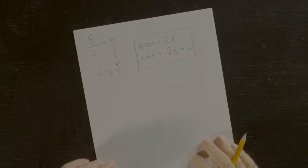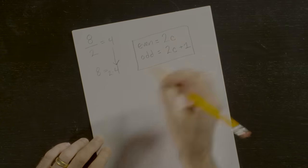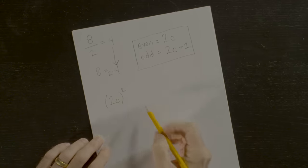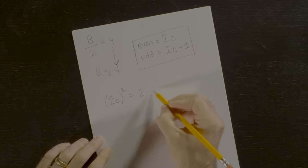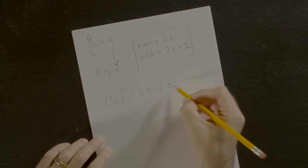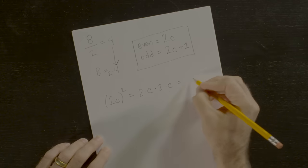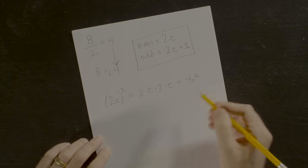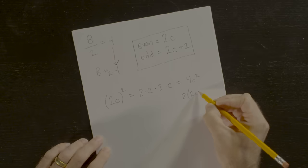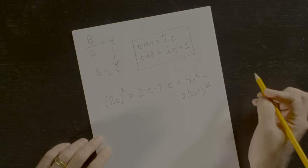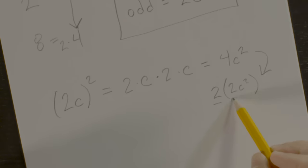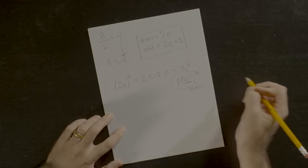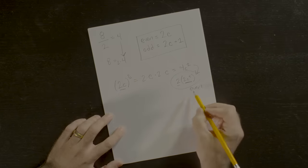Let's take an even number, expressed as 2 times some integer c, and square it. 2c squared equals 2c times 2c, which equals 4c squared. We can pull a 2 out of that and get 2 times 2c squared. This is 2 times some integer — and we know that 2 times an integer is even — so an even number squared is even.